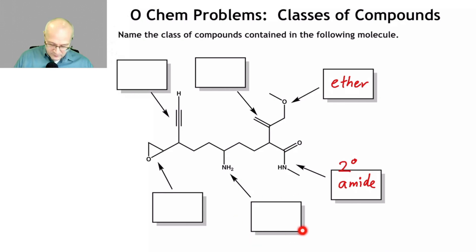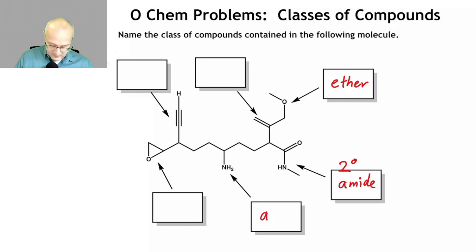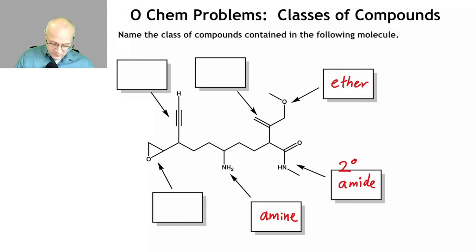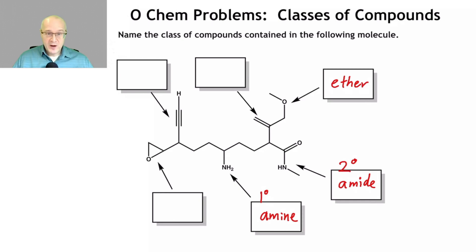Moving along, this one here — when the arrow is pointing at that nitrogen — this is an amine. You have a nitrogen that is not directly attached to a carbonyl, but it's attached to a carbon group that's not carbonyl. That has to be amine. And this is a primary amine. Two ways to look at it: there are two hydrogens on the nitrogen, that's a primary amine; or if there's one carbon group on the nitrogen, that's a primary amine. Either way gets you to the right answer.